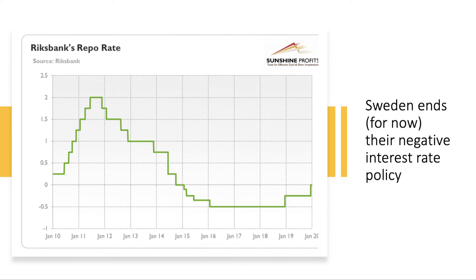Sweden had a negative interest rate policy for several years but has brought it to an end. In December 2019, the Riksbank in Sweden — the world's oldest central bank — lifted their main policy interest rate from minus 0.25% to zero, ending the experiment with negative interest rate policies.